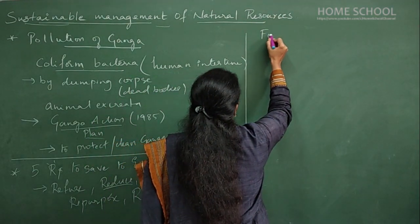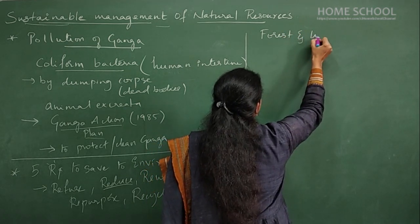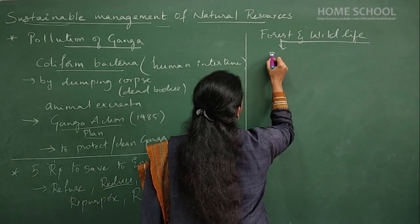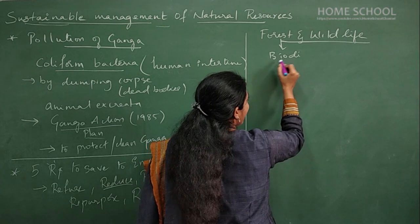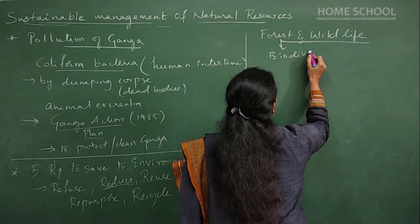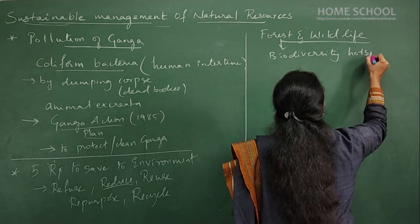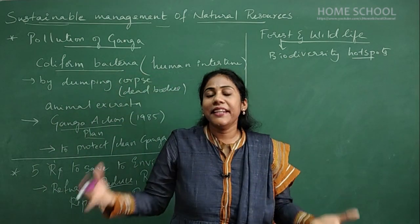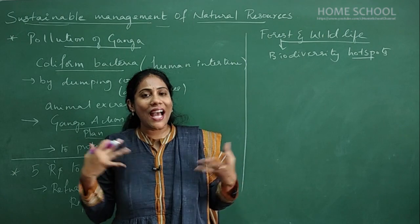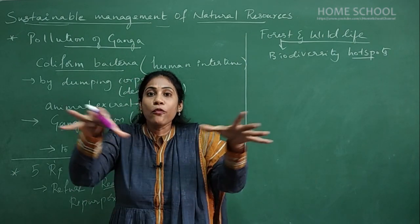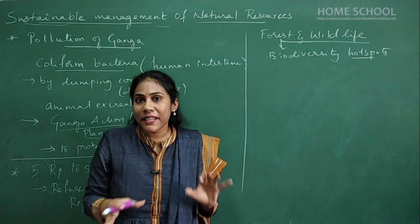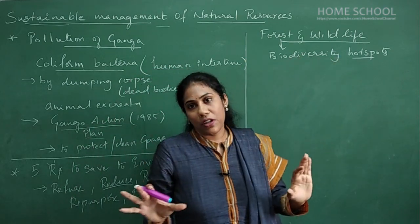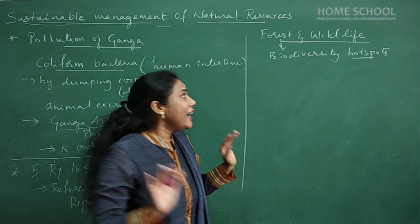The next concept in the chapter is about forests and wildlife. Forests are called biodiversity hotspots because they are areas where you will find many varieties of animal species and plant species. That is why they are called biodiversity hotspots.